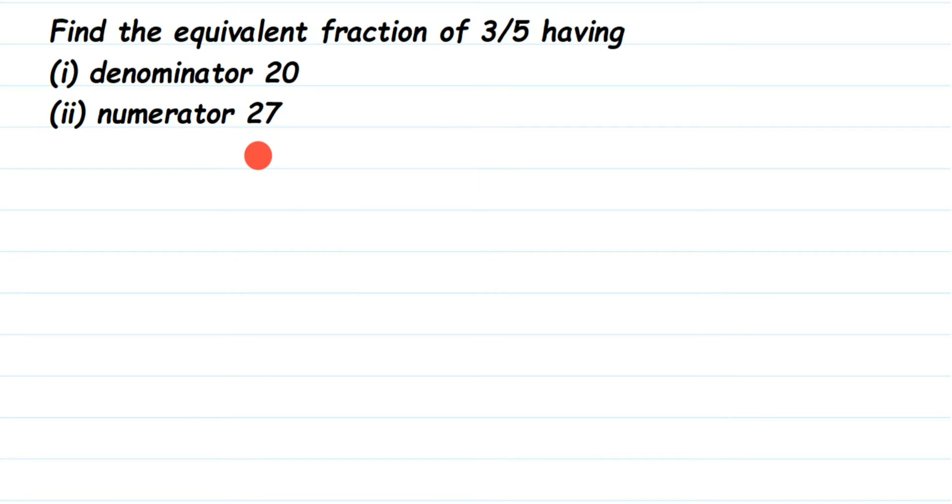So there are two ways of finding out the equivalent fraction: one is multiplication and one is division. But in this question they have given conditions that the denominator should be equal to 20, and the second one it is 27. So they have already mentioned what should be denominator and the numerator.